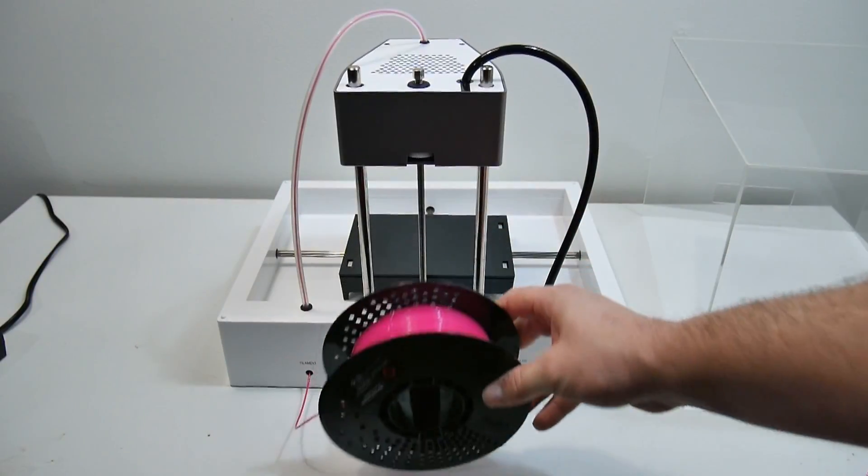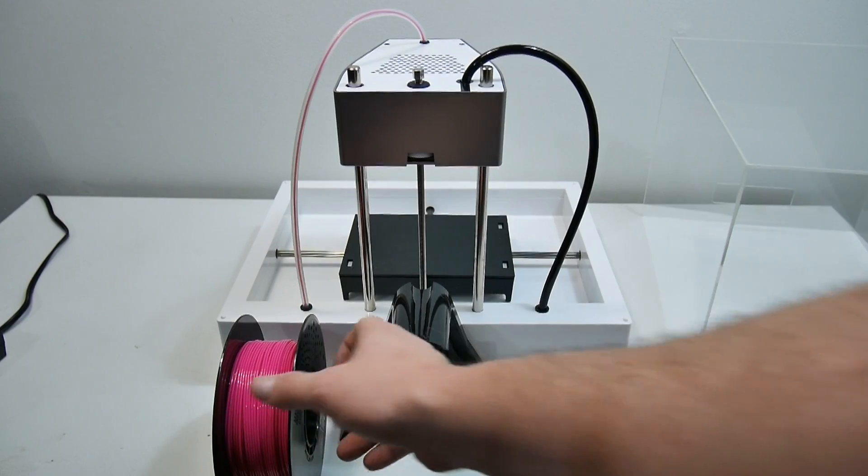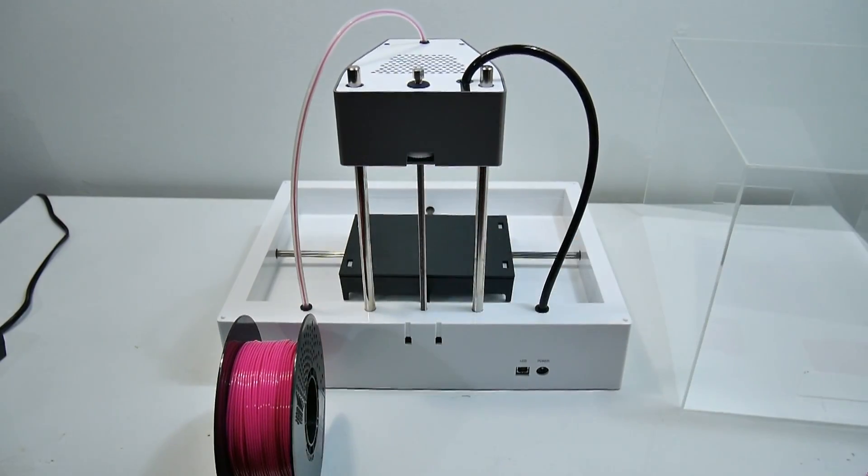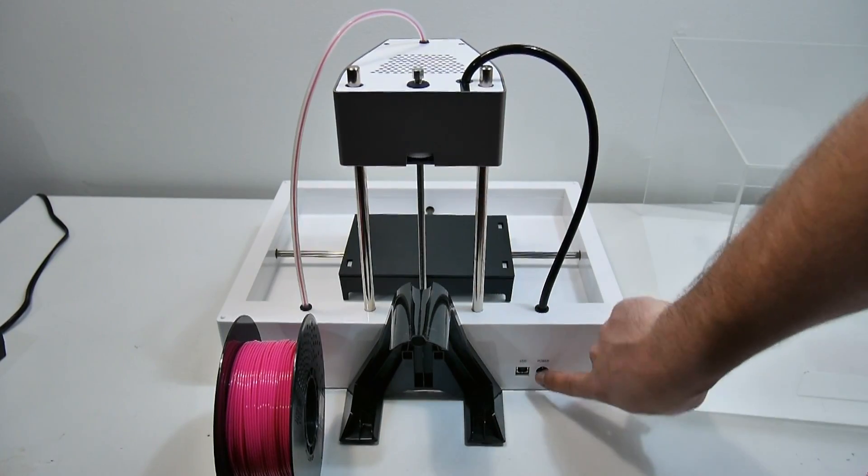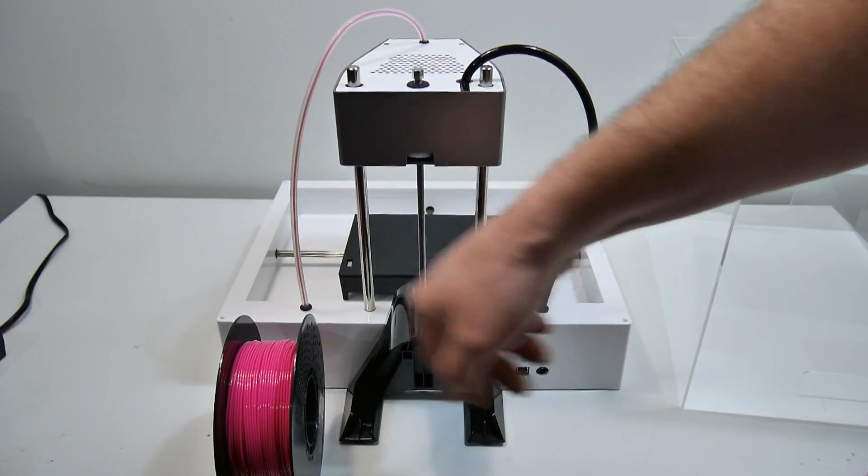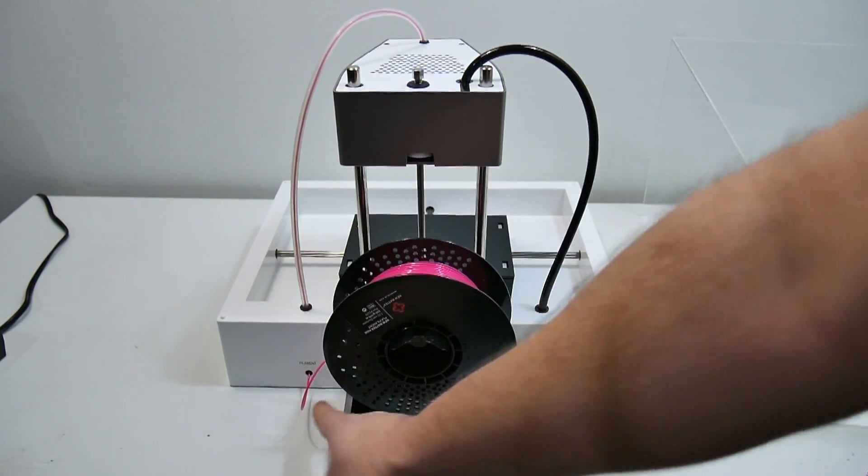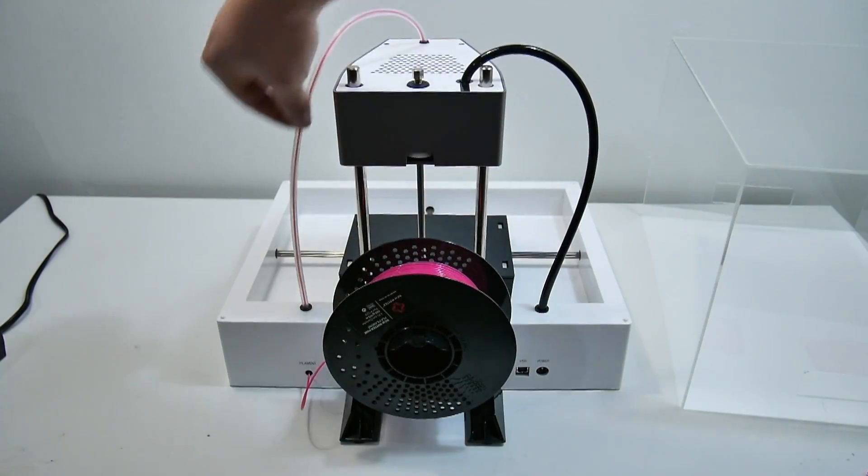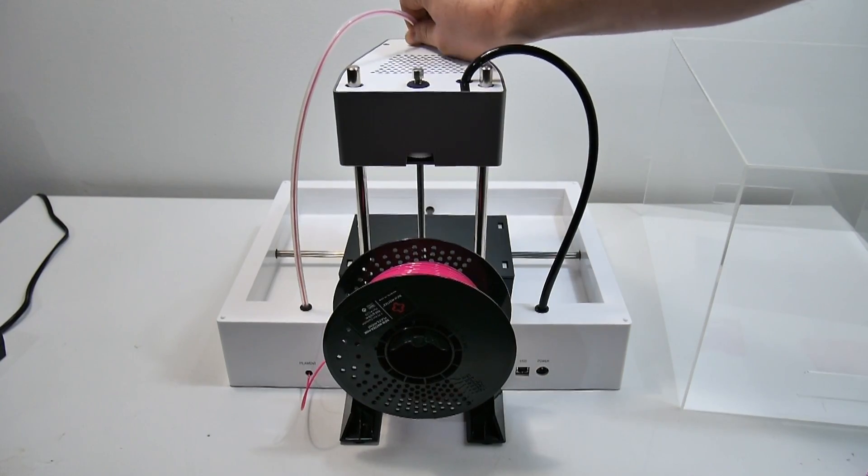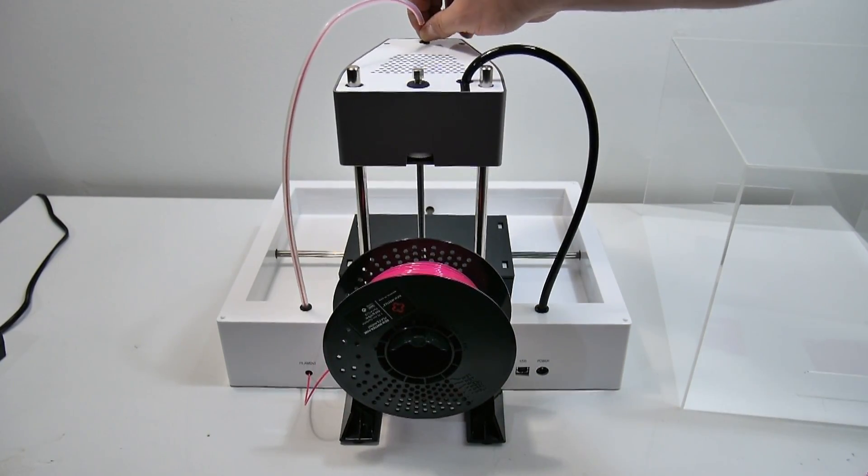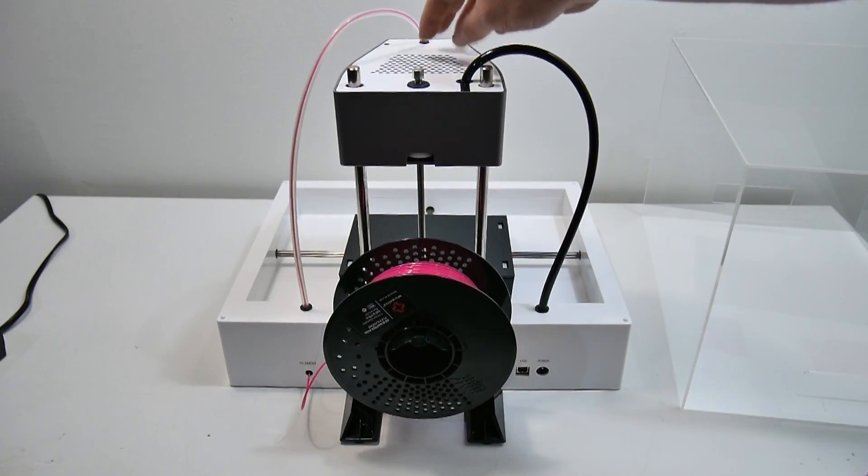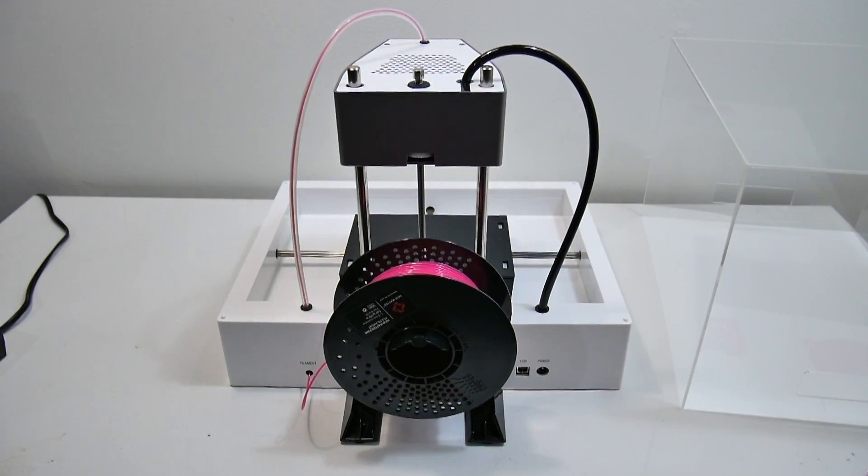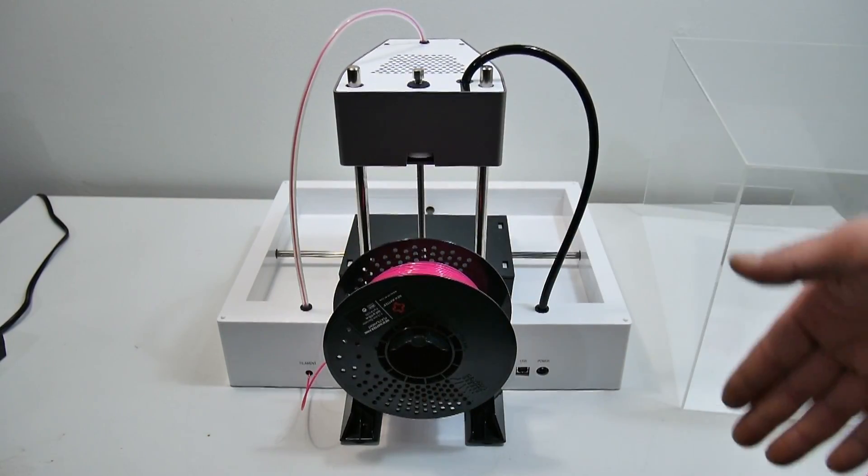So on the back side here, we have our filament spool holder that actually comes in the box. This will disconnect. You just throw it right on. So there's not many parts at all to put together. We have the USB port and our power. Over here, we have our filament feed. It goes up the tube here, and this top of the tube actually pops off, so you can unload it and load it. Within the software, there is an option to unload and load new filament, which is really cool. You just press it. It heats up. It tells you exactly what to do. You change your filament out, and you're good to go.